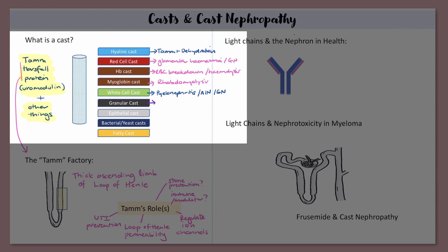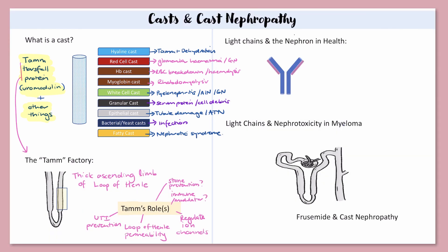Granular casts are a mixed bag — they can either be derived from serum proteins or from cellular debris, so if you had a white cell cast that broke down, that might form a granular cast. Epithelial casts occur in the setting of tubular damage such as acute tubular necrosis — it's just tubular cells literally sloughing into the urine. Bacterial and yeast casts occur in the setting of infection, and fatty casts occur in nephrotic syndrome. But none of these have anything to do with cast nephropathy, and that's what we're interested in today.